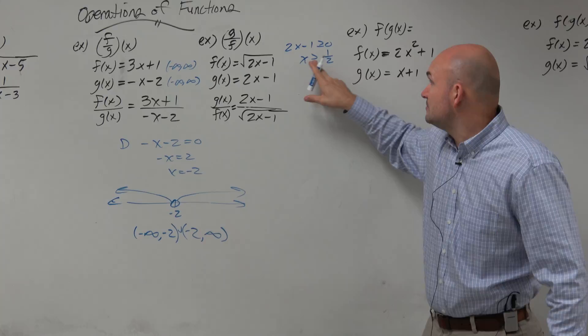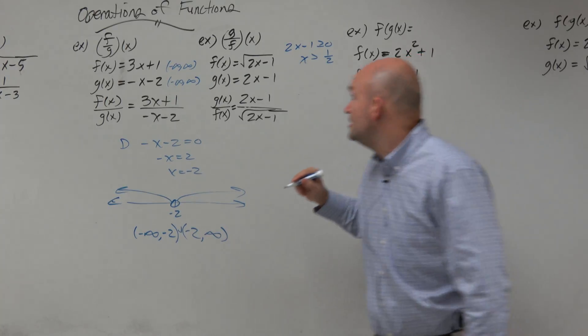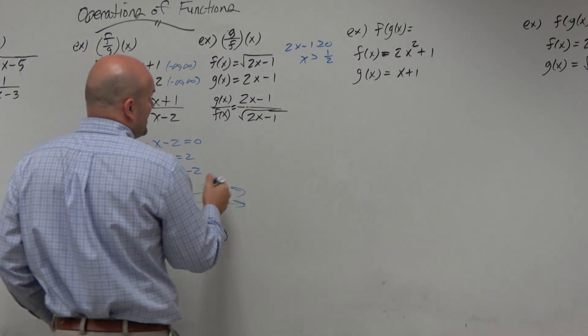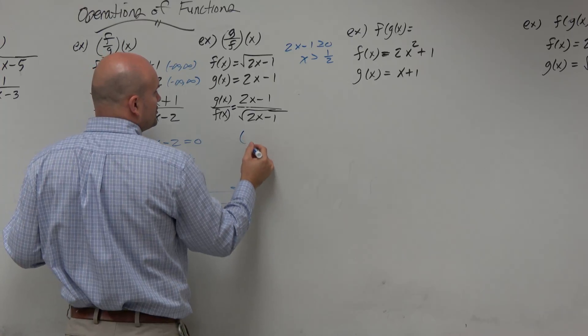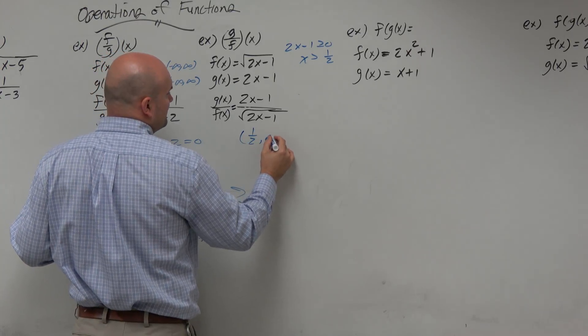Because if it's equal to 1 half, it's 0. So all we need to do is just erase that. So that means x has to be greater than 1 half. So the domain is going to be 1 half comma infinity.